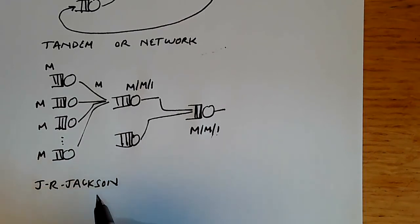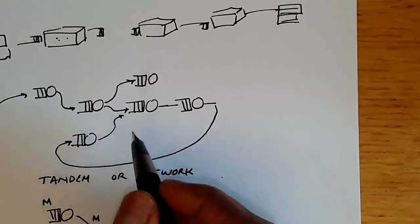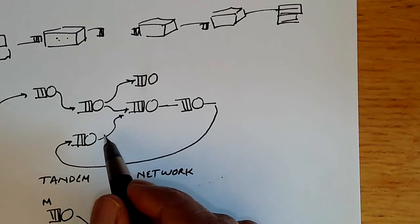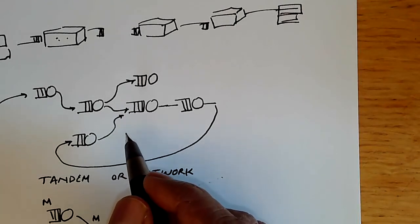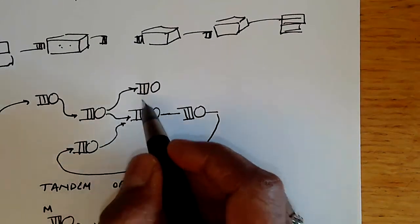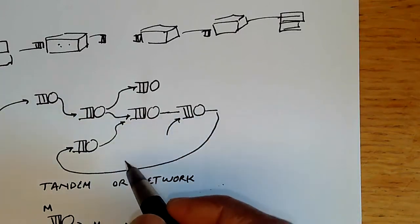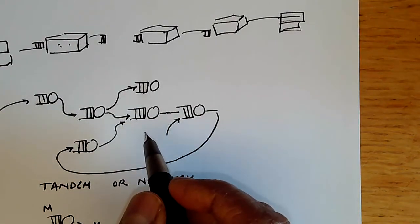However, a mathematician called J.R. Jackson was able to show that under some conditions we can take these fairly complicated systems including rings and cycles and analyze them.